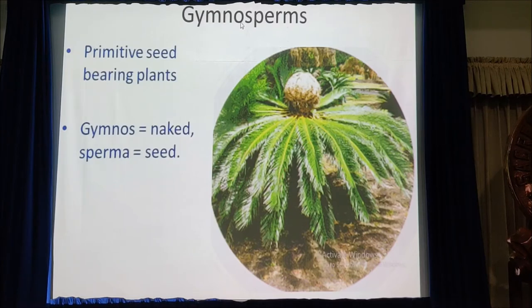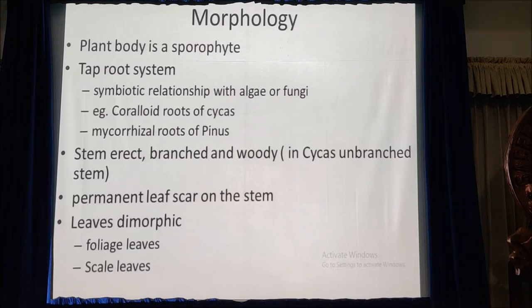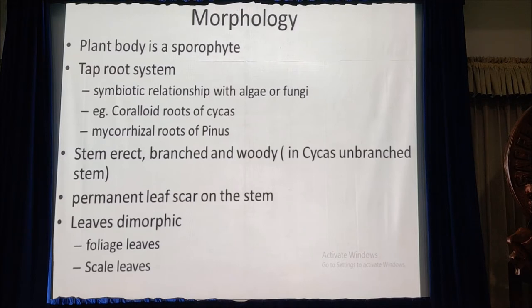Majority of the members of gymnosperms are evergreen trees or shrubs with xerophytic adaptations. Regarding the morphology of gymnosperms, the plant body is a sporophyte and it is differentiated into root, stem and leaves. Regarding the roots, the root system is a tap root system. Roots of some plants have symbiotic relationship with algae or fungi. For example, coraloid roots of Cycas having algal association.